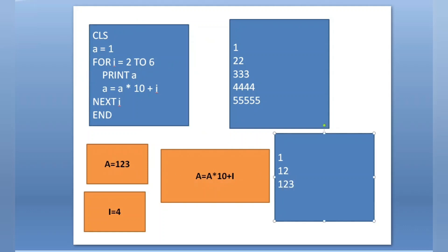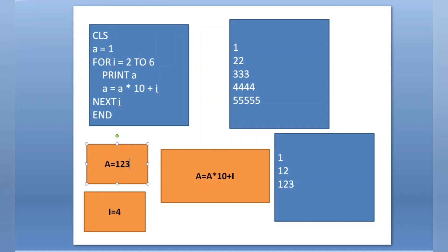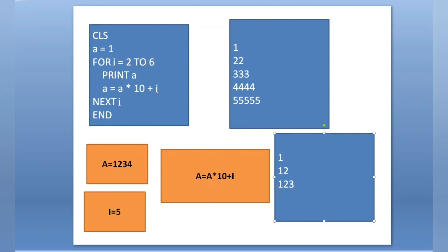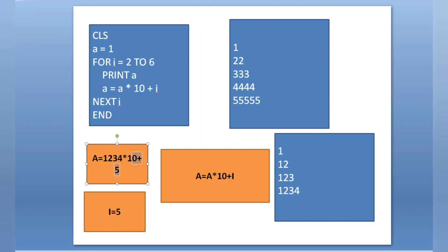After printing, a = a * 10 + i again. The value of a is 123, so 123 * 10 = 1230, plus i which is 4, gives 1234. We got 1234. Next i — i becomes 5. Condition i = 5 in range 2 to 6 is true, so PRINT a — a is 1234, 1234 is printed. After printing, a = a * 10 + i: 1234 * 10 + 5.